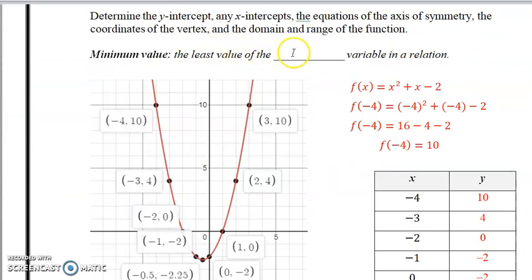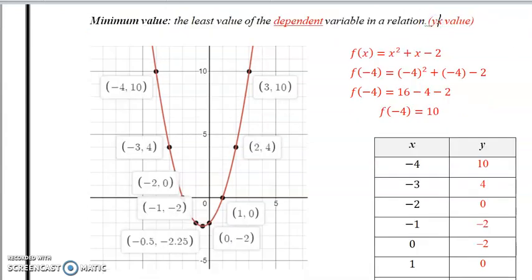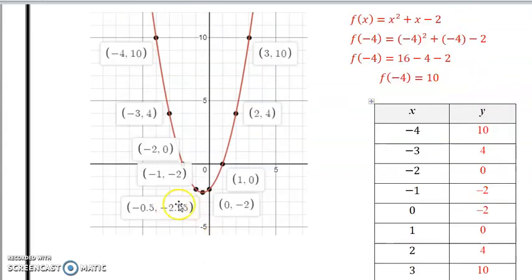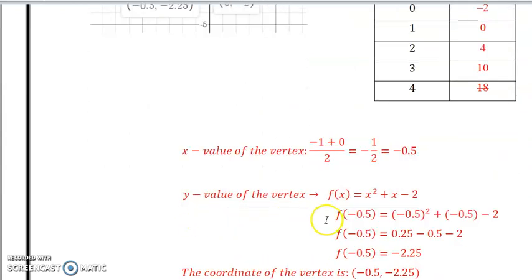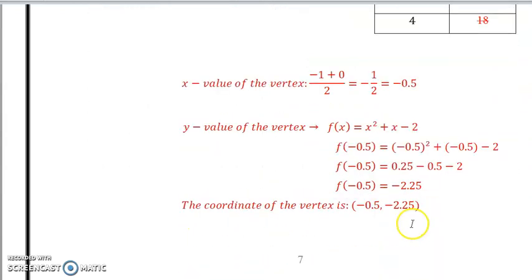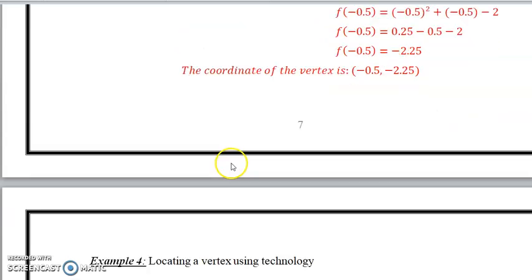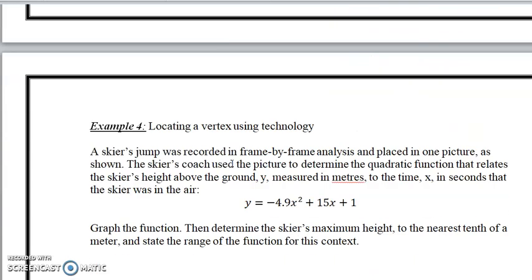And remember, the minimum value is the least value of the dependent variable. The dependent variable, which is the y-value. It's the y-value. So the y-value here, negative 2.25. The y-value of the vertex. We calculated it. And I showed you how to do the graphing technology and as well manual. So that's it for this video. In the next video, we'll finish up with example 4 for the word problem. Hope everybody's enjoying the videos. Have a great day. Thank you.